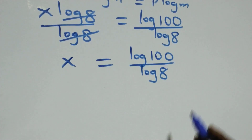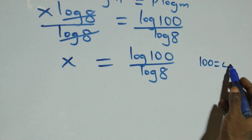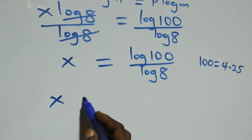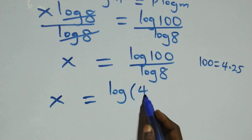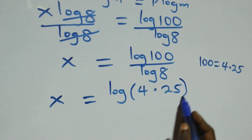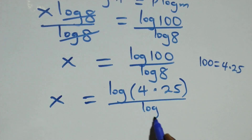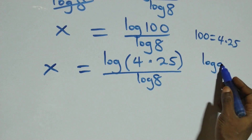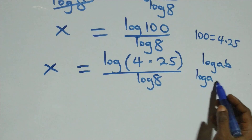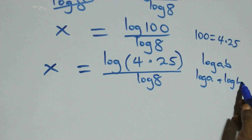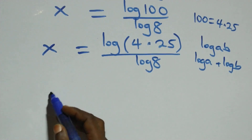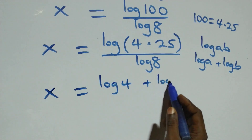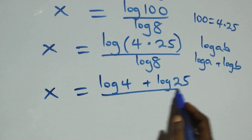Next, we express one hundred as 4 times 25. This implies x equals log(4 times 25) over log 8. Then, following the law of logarithms where log(a times b) equals log a plus log b, we get x equals log 4 plus log 25 over log 8.